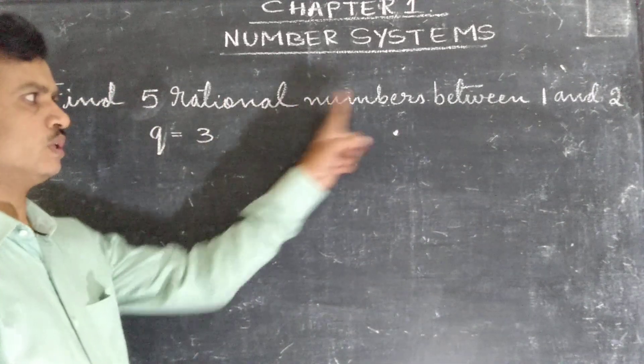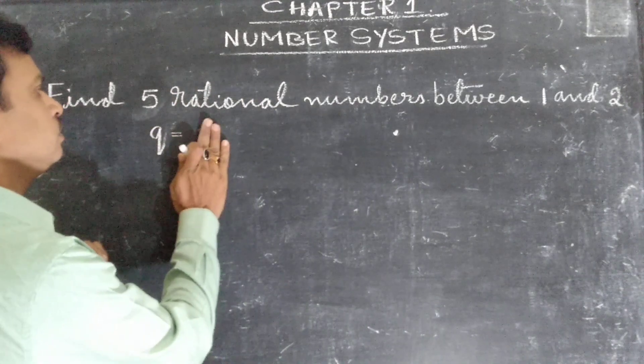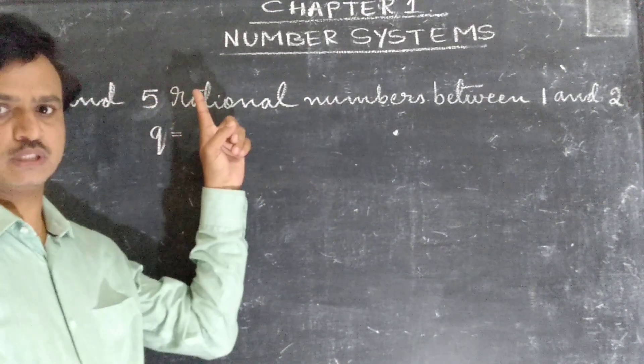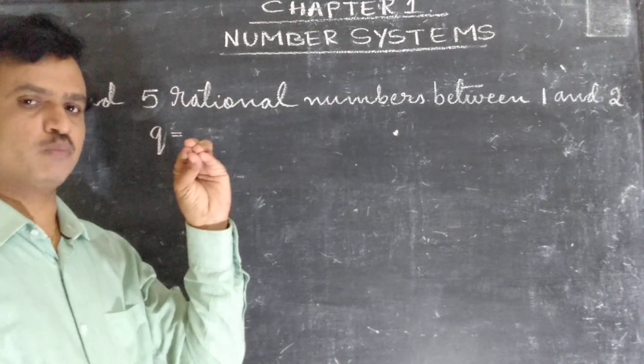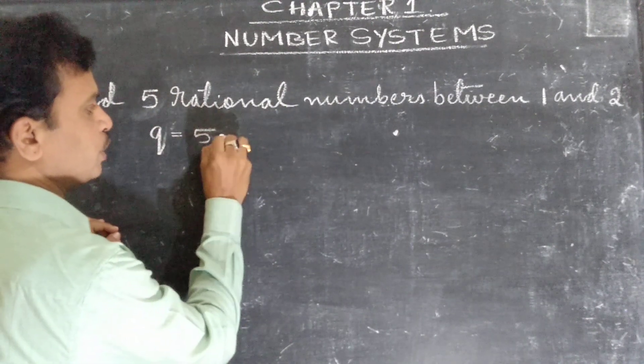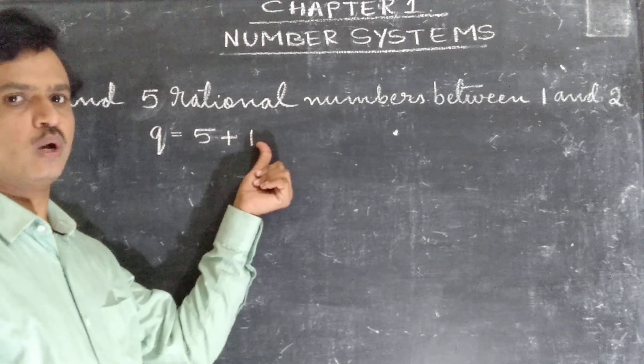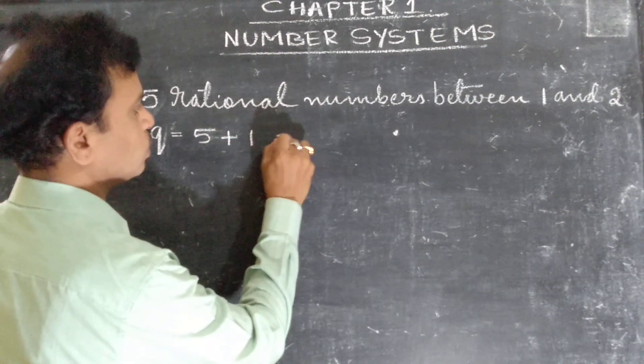Find 5 rational numbers between 1 and 2. We have 5 rational numbers. 5 rational numbers means here the quotient q equals what we will take? 5 plus 1. That is equal to 6.